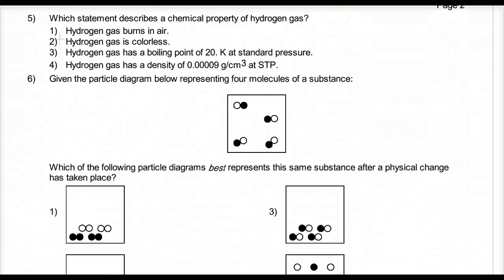Number 5. Which statement describes a chemical property of hydrogen gas? Chemical property means when it does react, it makes something new. Well, we should know that burning means it combusts and reacts with oxygen, and that's a chemical change. Color doesn't change the chemical formula. Boiling something doesn't change the chemical formula. And checking out someone's density doesn't change the chemical formula. But burning, for instance, hydrogen, when it reacts with air, which is oxygen, would actually make water.